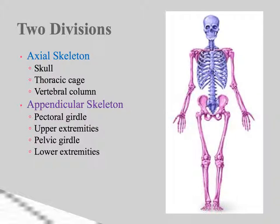There are two divisions to the skeleton. There is the axial skeleton, outlined in blue on this diagram, which includes the skull, the thoracic cage or rib cage, and the vertebral column. The appendicular skeleton contains your appendages and the various girdles that connect them to the axial skeleton — the pectoral girdle and the pelvic girdle.